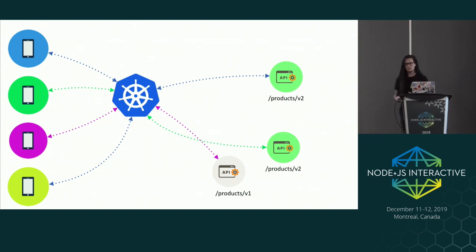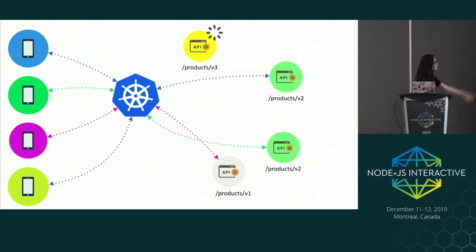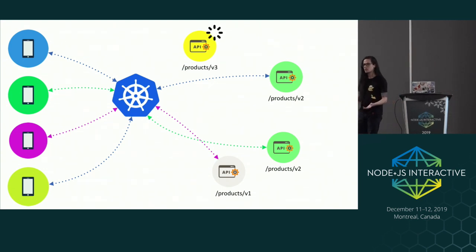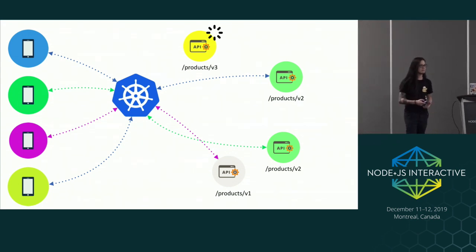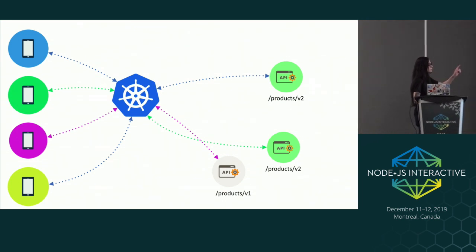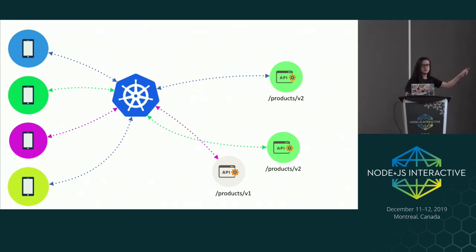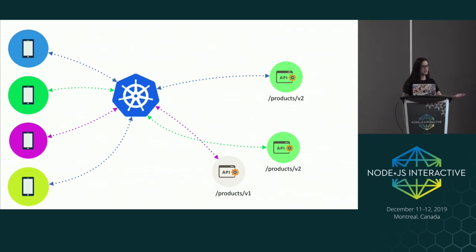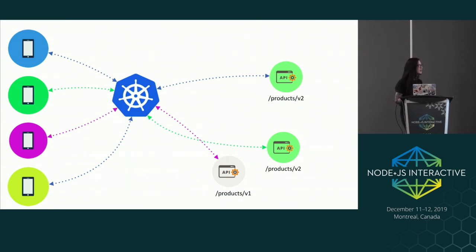In another scenario, we have V3 deployed, but V3 is not safe — maybe the database is wrong, or some third-party connection is not working. Our infrastructure continues the same because Kubernetes won't redirect incoming traffic to this broken application or kill the previous working version. Our infrastructure is safe and running as planned.